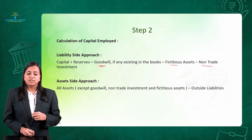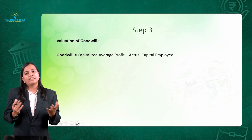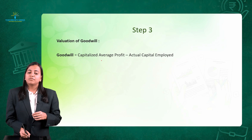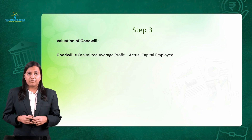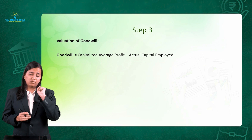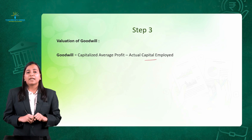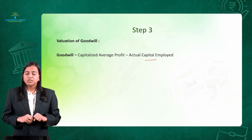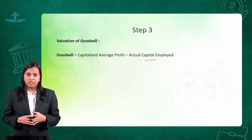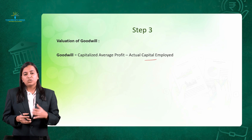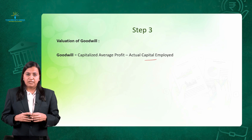Step number 3 is the final calculation of Goodwill. Goodwill is given by the formula: Capitalized Average Profit (from Step 1) minus Actual Capital Employed (from Step 2). This covers the formula and steps. Now we are going to solve an illustration to get a better understanding.